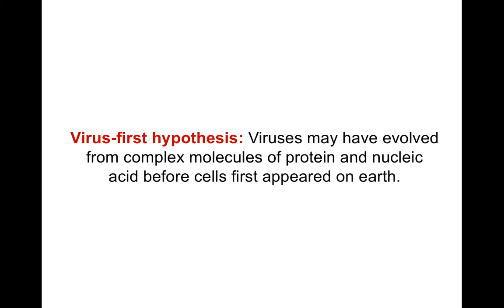Thinking about the RNA world concept discussed in previous classes: RNA could be the first biological molecule on earth because RNA can act as both a genetic material storing genetic information and as an enzyme like ribozymes. RNA viruses contain RNA as their genetic material along with proteins which protect these RNAs. So RNA viruses may have appeared just after the RNA world, and subsequently different forms of life like archaea, bacteria, and eukaryotes may have evolved from their corresponding viruses.